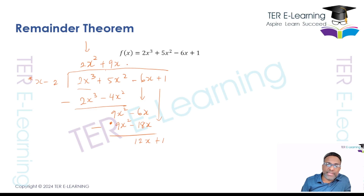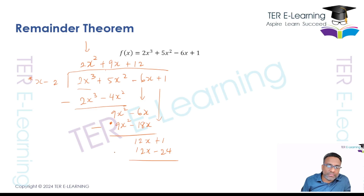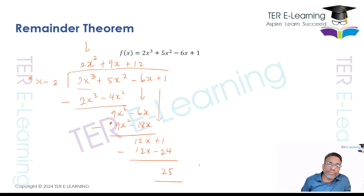This means our next term is plus 12. We take 12 and multiply by x minus 2, giving 12x minus 24. Subtracting: 12x minus 12x gives 0, and 1 minus minus 24 is the same as 1 plus 24, giving 25. This 25 is our remainder — the same as before, so we know our answer is correct.